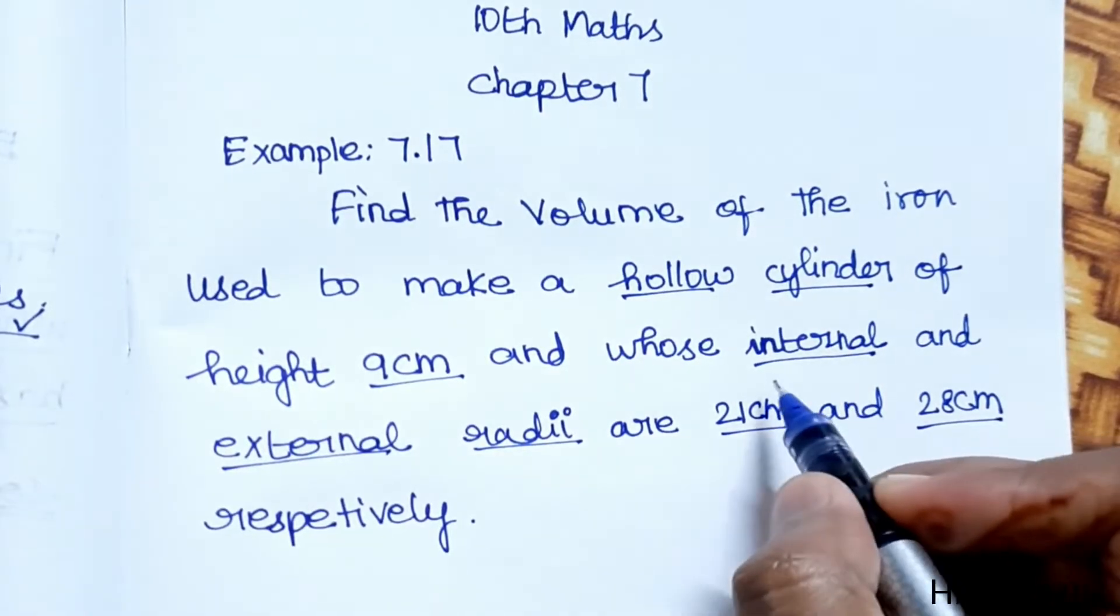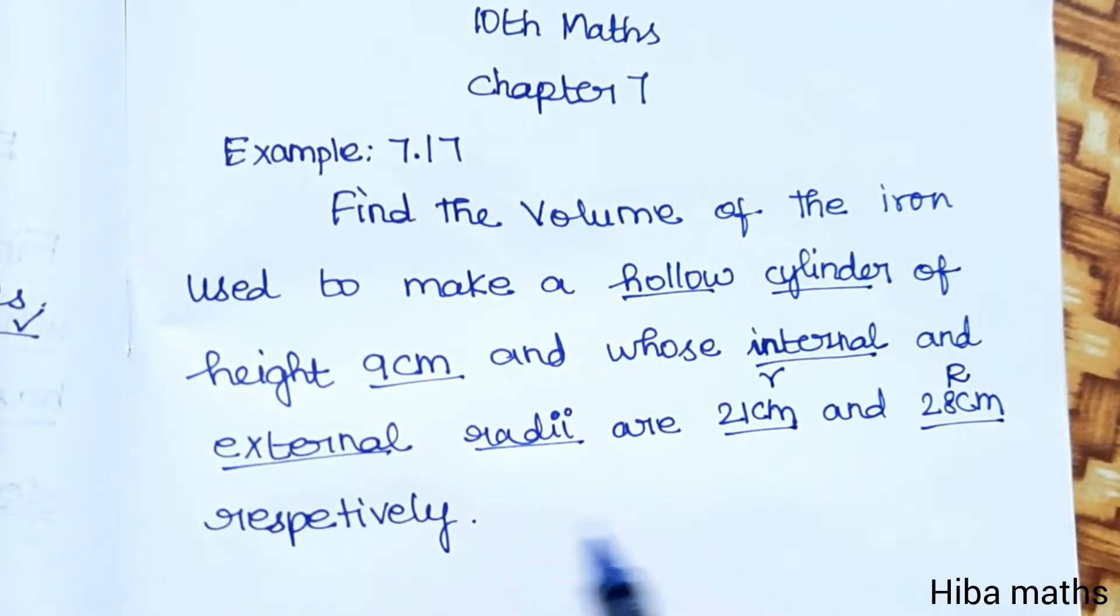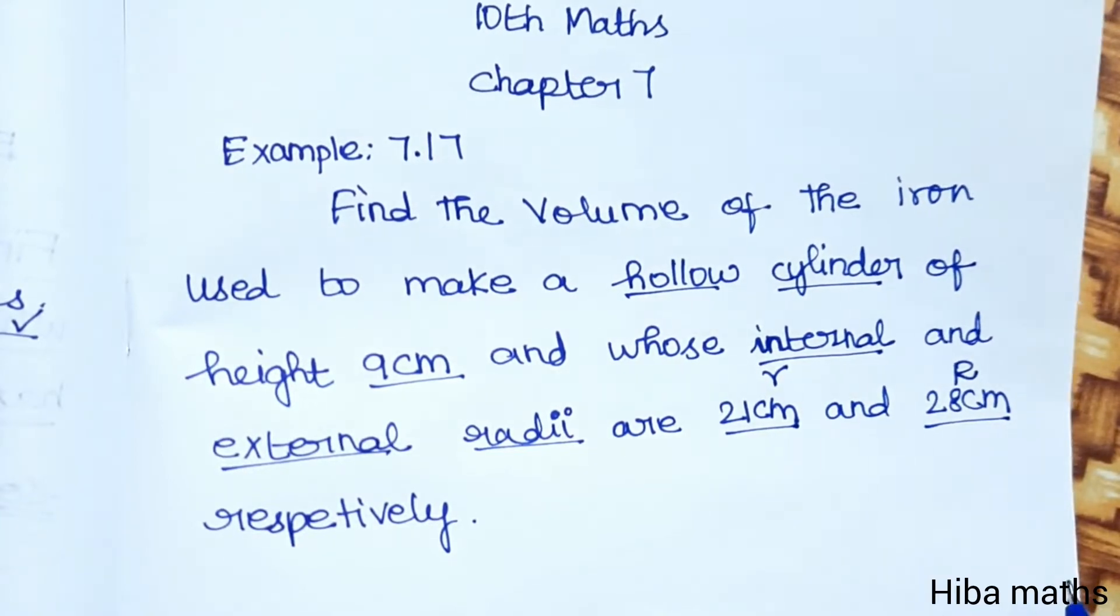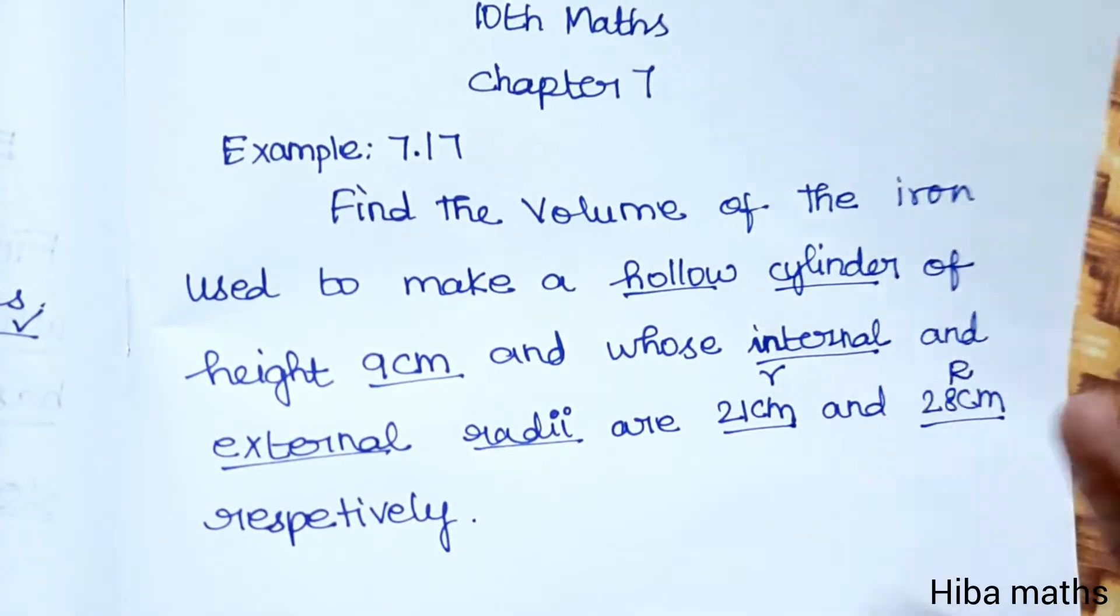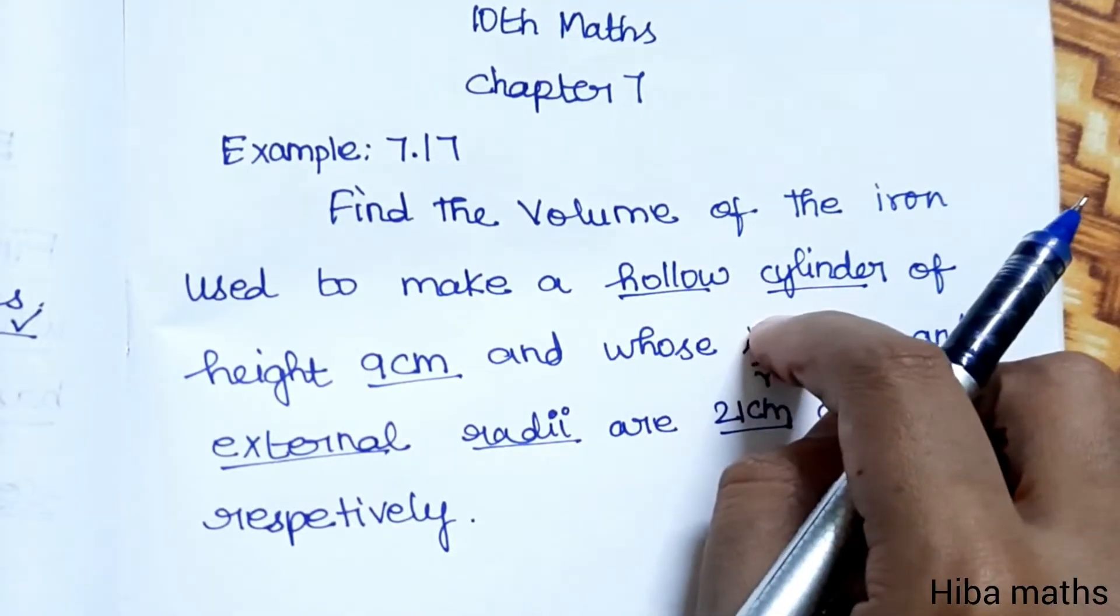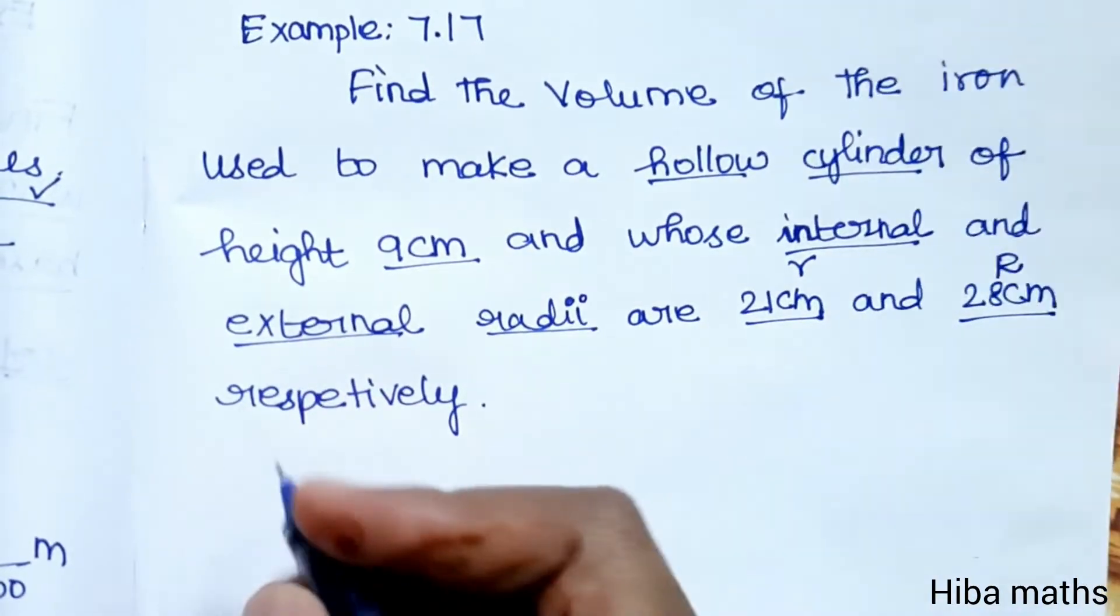The internal radius is small r, external radius is capital R. The volume of iron is the same as the volume of the hollow cylinder, so the volume of iron used equals the volume of the hollow cylinder.